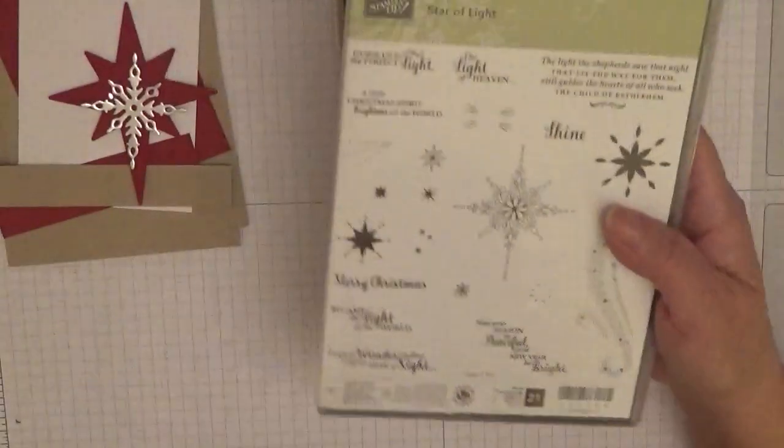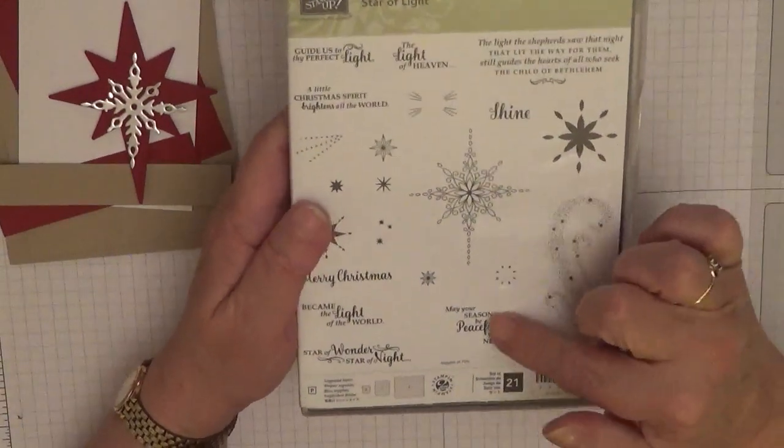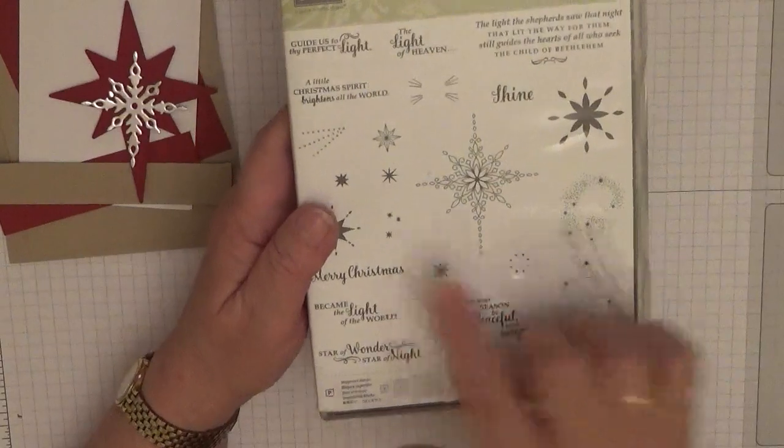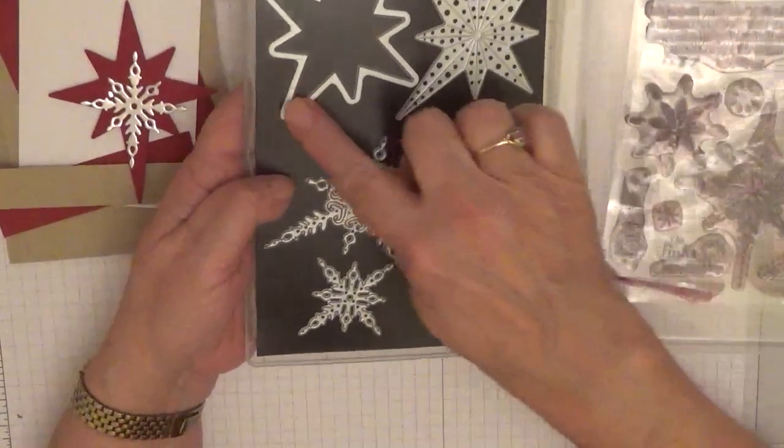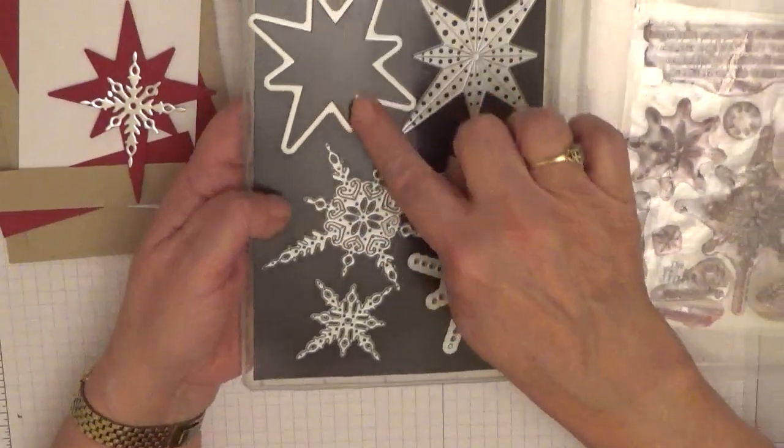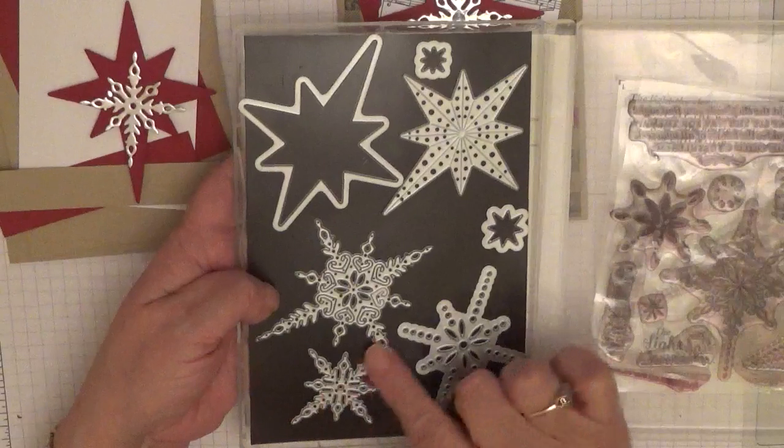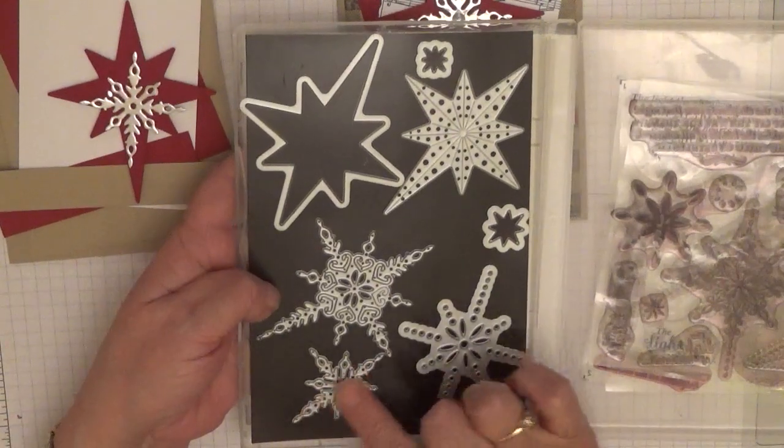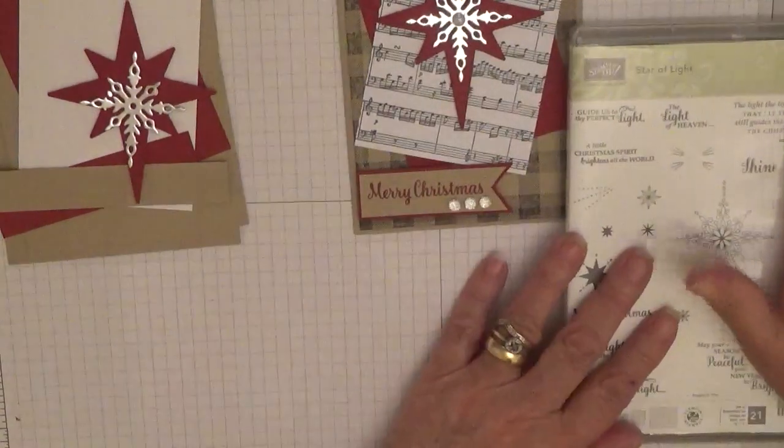The stamp sets we're using. The star of light and the only stamp I'm using here is the Merry Christmas. But I have used this die, the big star die, and the little snowflake star die. That didn't make sense, did it? But you know what I mean.